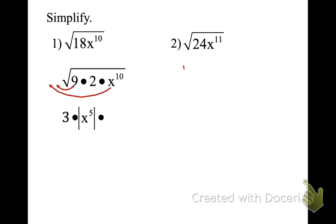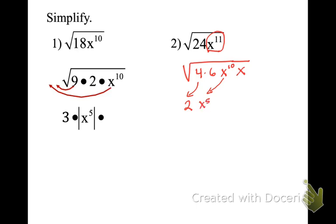Okay, so √(24x¹¹). I'll break 24 down — I know there's a 4 in it, so 4 times 6. And I have to break down x to the 11th. Remember what we did — we go to the closest perfect square underneath 11, which is 10. So x to the 10th times √x. I can pull out a root here — I get a 2. I can pull out x to the 5th. What stays under the radical is 6 and x. So my final answer is 2x⁵√(6x). We don't put absolute value around x⁵ because there's another one left under the radical.